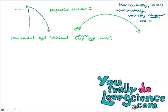If the velocity is constant and we have no acceleration, then horizontally all we need to use is velocity equals distance over time — this simple equation. This is the only horizontal equation you need in these projectile motion problems, because of the lack of acceleration horizontally.